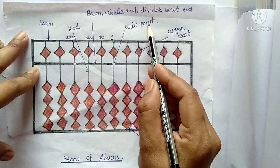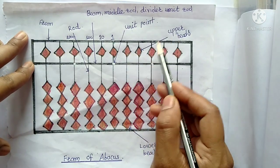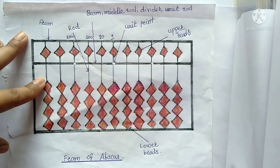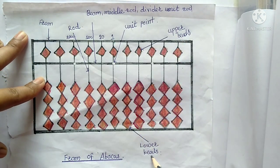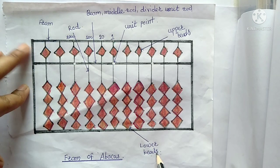This white dot is called a unit point. This is the upper bits or it is also called as heaven bits. And this is the lower bits. The lower bit is also called earth bit.